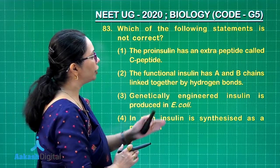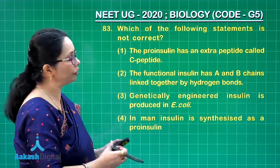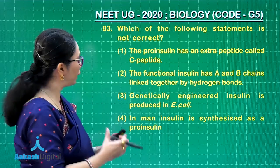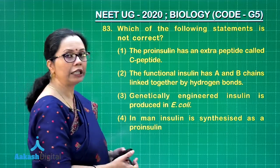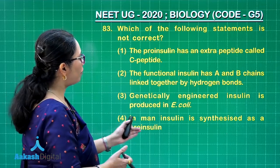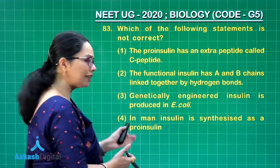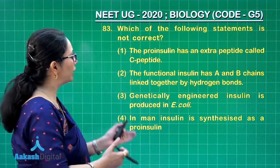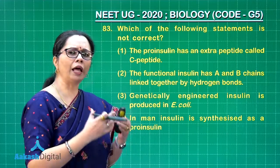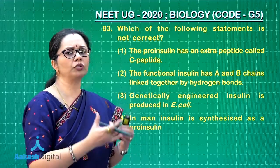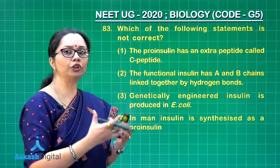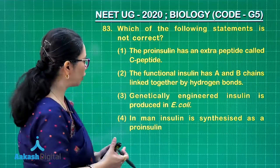Genetically engineered insulin — that is humulin, which the Eli Lilly company had prepared — was produced in E. coli. That is right. In man, insulin is synthesized as a pro-insulin. That is right. That is the inactive form, and many of the hormones are secreted as pro-hormones, and insulin is also one of them.